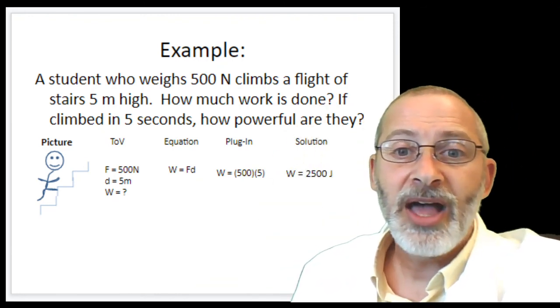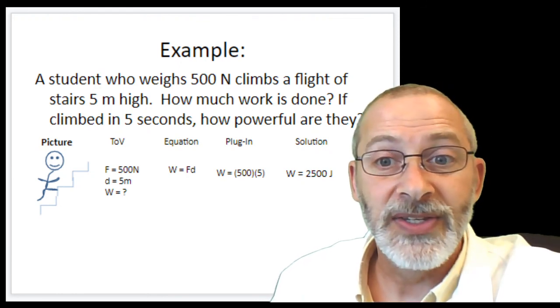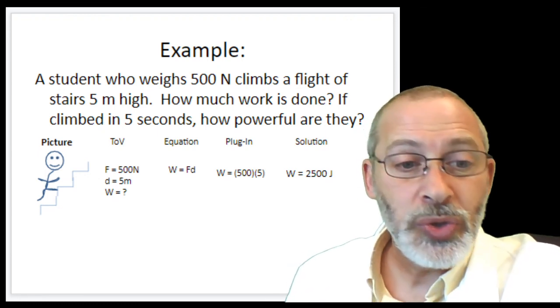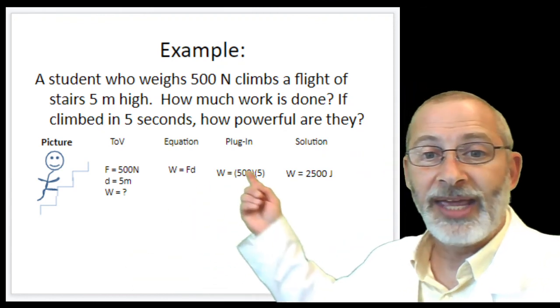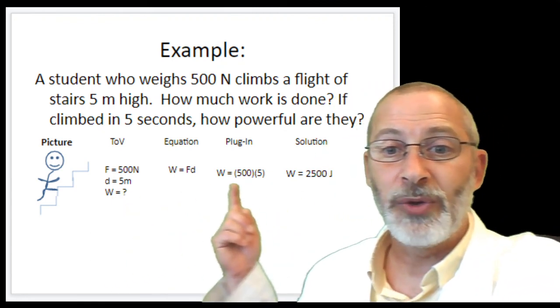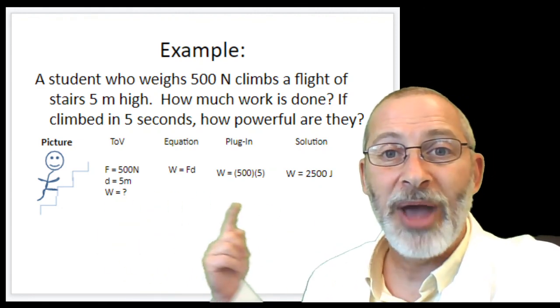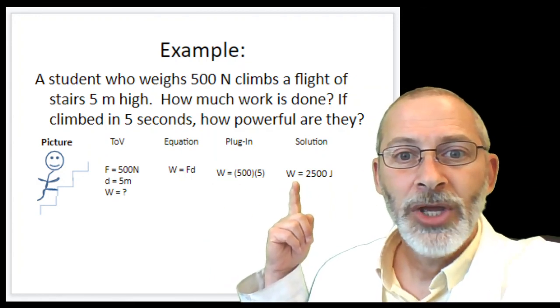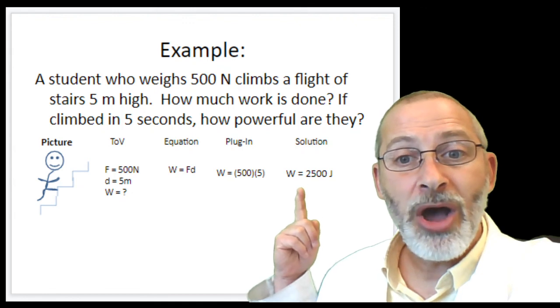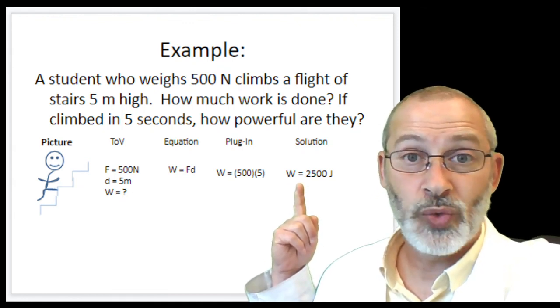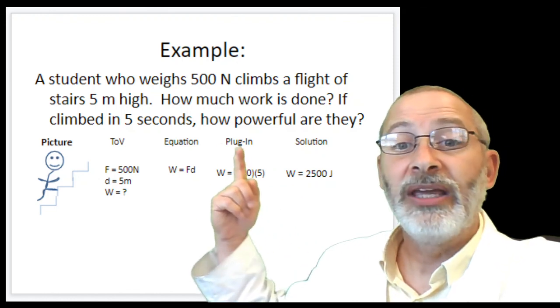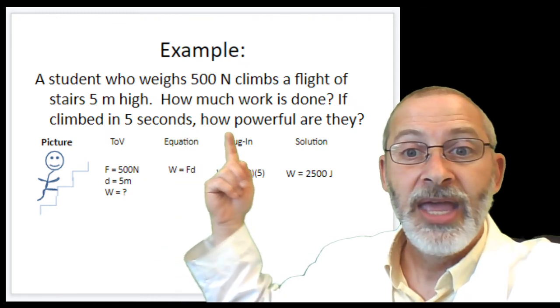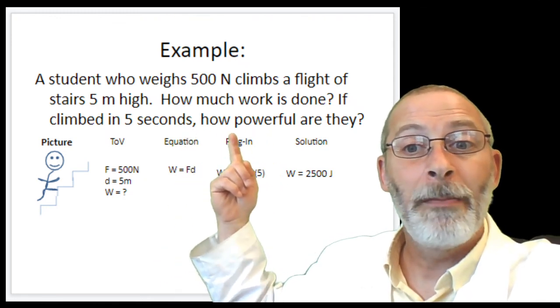Because the second part of the question here begins, if they climbed it in five seconds, how powerful are they? So, using our information from yesterday, which is all written right here already. And if you want to see this in your book, just turn the page back and you've already done all of this work from yesterday to calculate work. So, starting today, you already know how much work is done, 2,500 joules. You are given additional information, 5 seconds, a measure of time, and you're being asked a question about powerful.